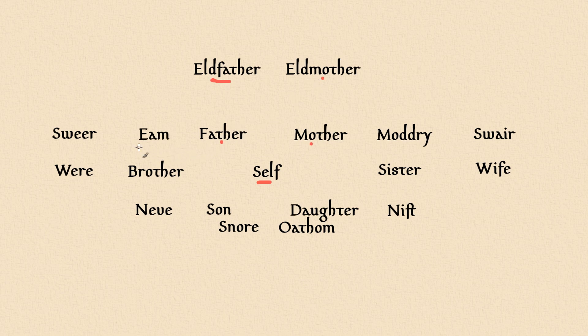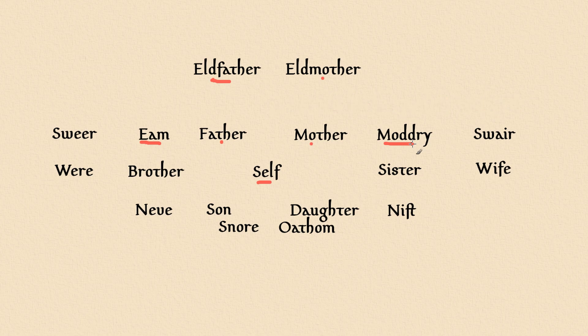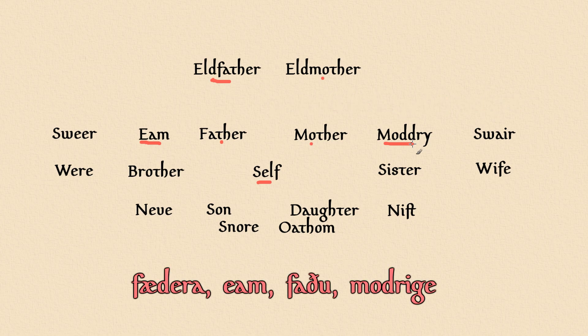Moving on, your uncle is your eem and your aunt is your madri. In Old English, there was a term for a paternal uncle, maternal uncle, paternal aunt, and maternal aunt.